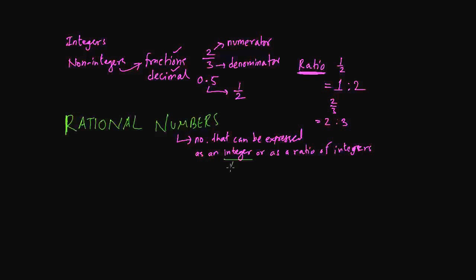So integer means the whole numbers, 1, 2, 3, 4, and ratio of integers, they're fractions, decimals. So that's what's a rational number.